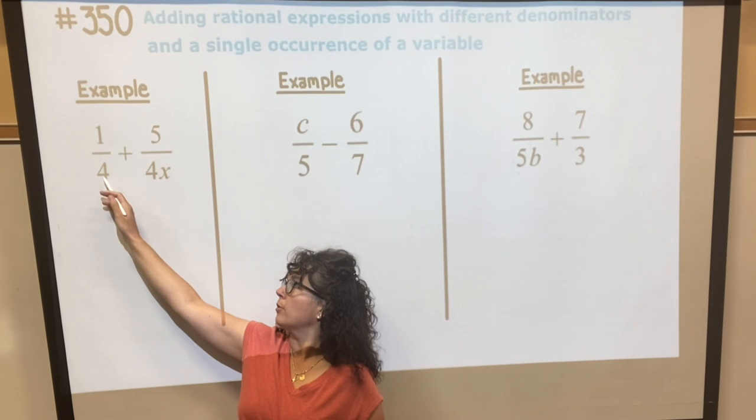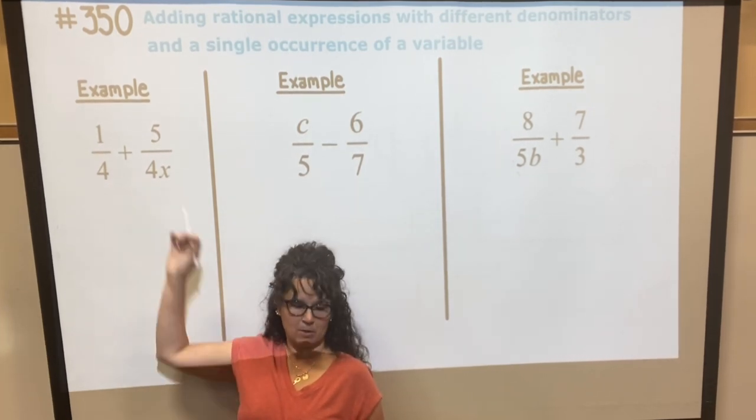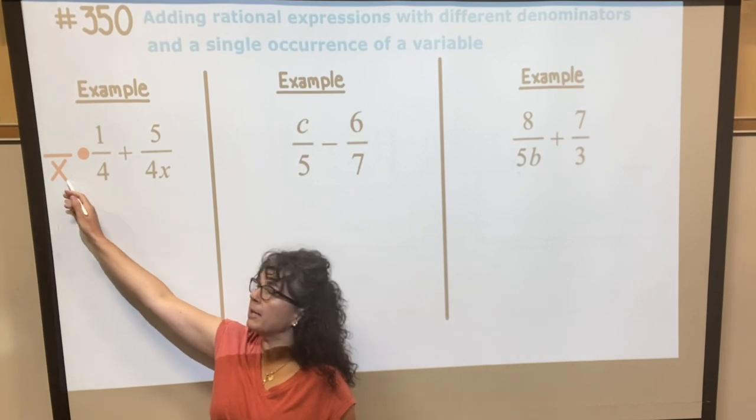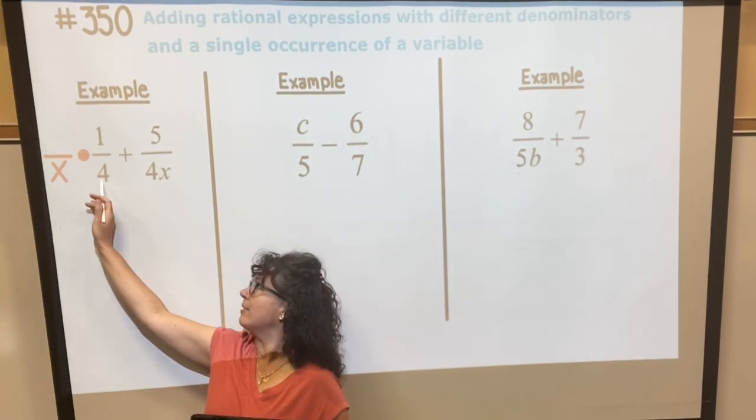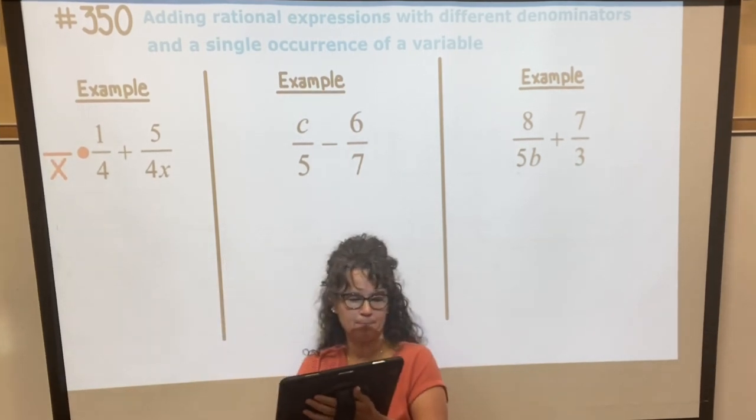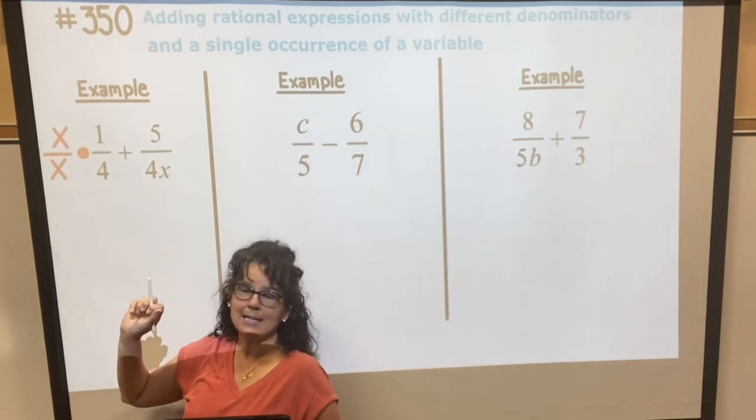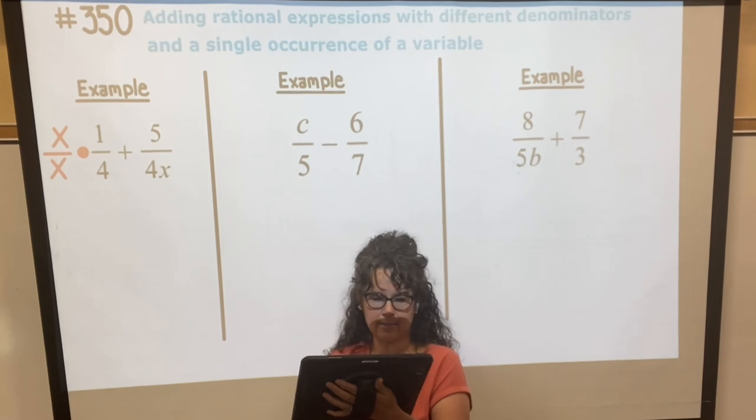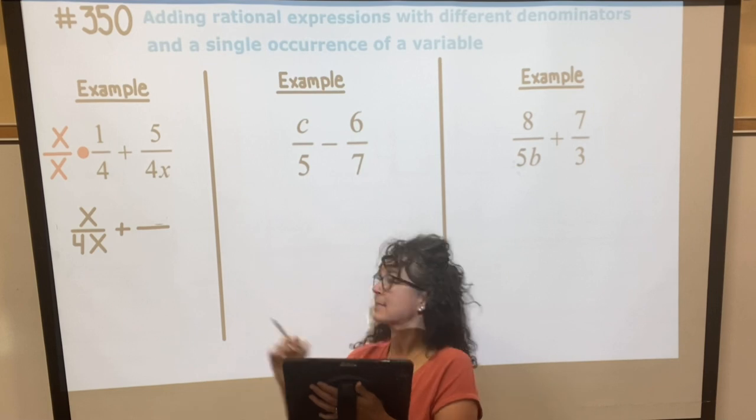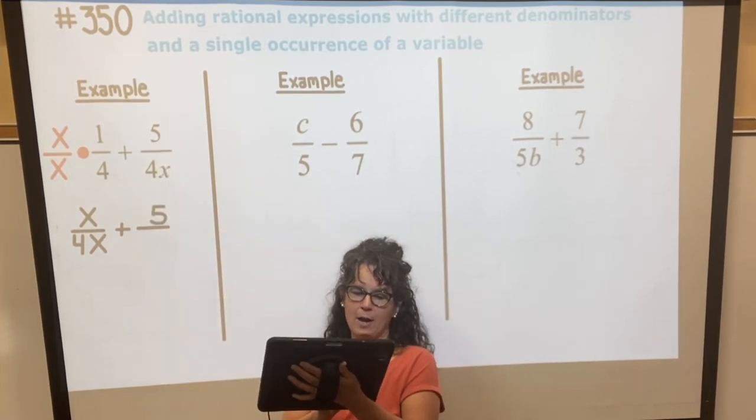Well, this one would need an x with it and then they would end up being the same. So in other words, what I'm going to do is multiply the denominator here by x and then the denominator is 4x. But what I do to the bottom I have to do to the top, so 1 times x is x and 4 times x is 4x. So I have x over 4x. I haven't done anything to this fraction, so I'm going to bring that down, the 5 and the 4x.